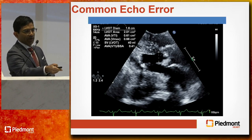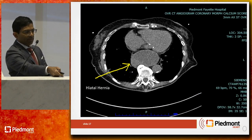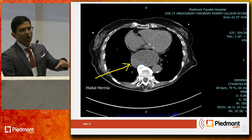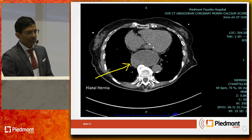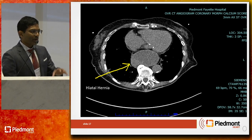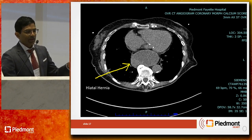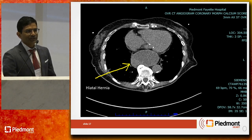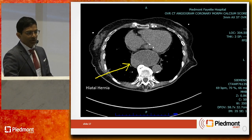The CT revealed a large hiatal hernia as the answer for her shortness of breath. Working at Piedmont Heart, I was able to walk 30 feet to thoracic surgeon Eric Soucy and say, 'Eric, why don't you take a look at this lady — she's a good 94-year-old.' Her coronary calcium score was only 19.